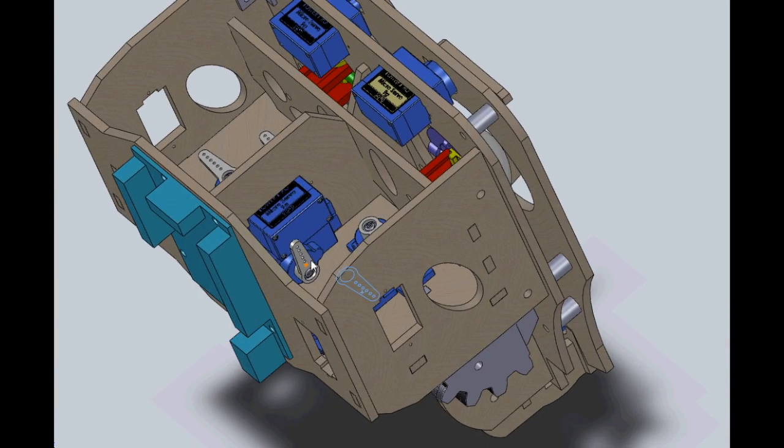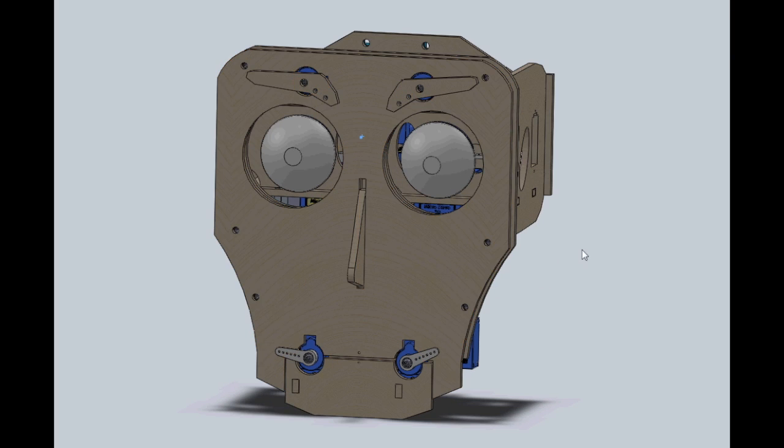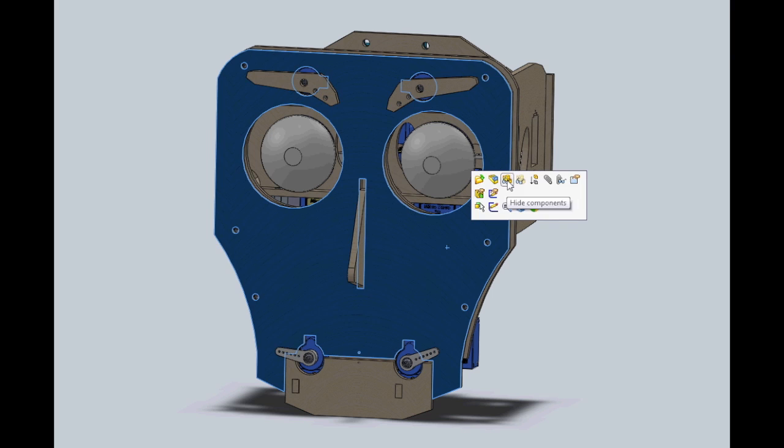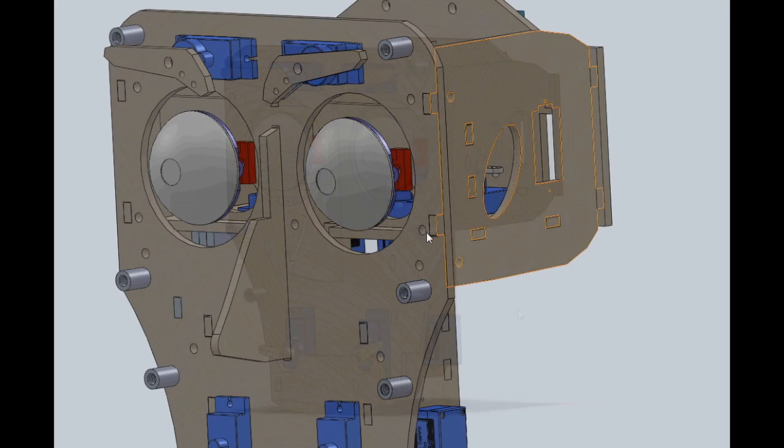The motors that are mounted there on the inside vertically are the eyelid control motors. Let's have a little bit of a look here. We'll take off his front face plate to get a better look at the workings.